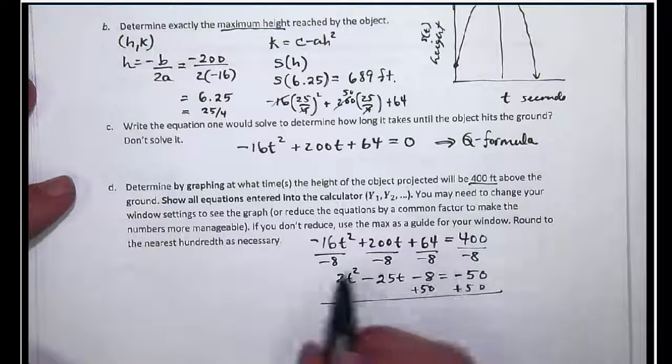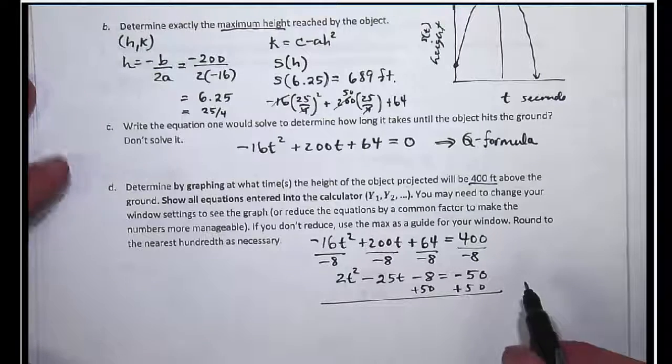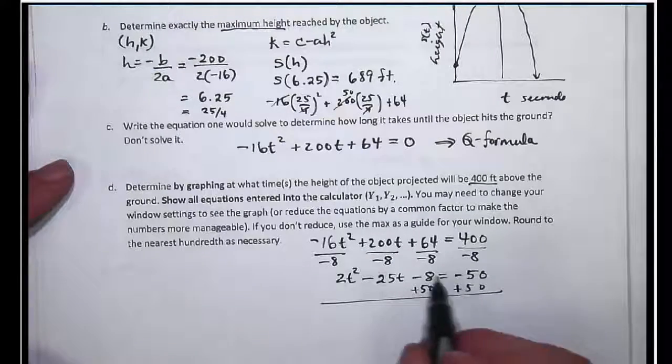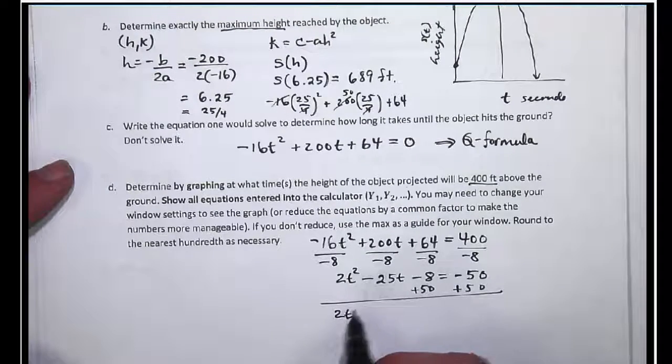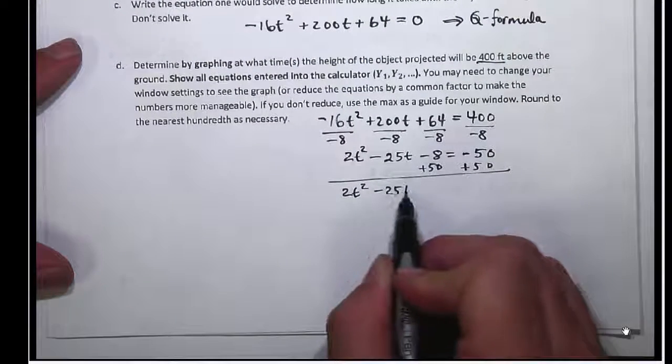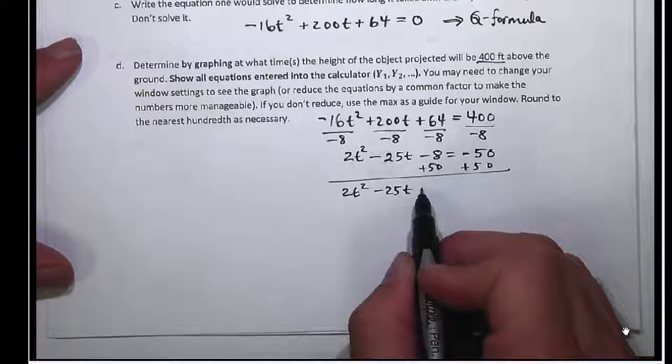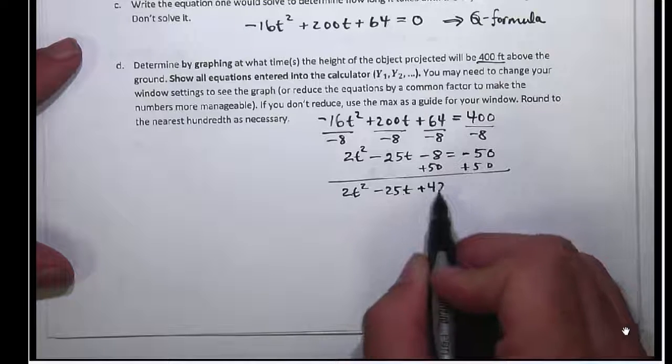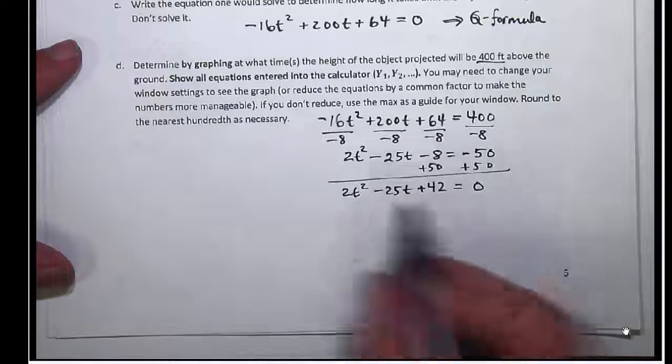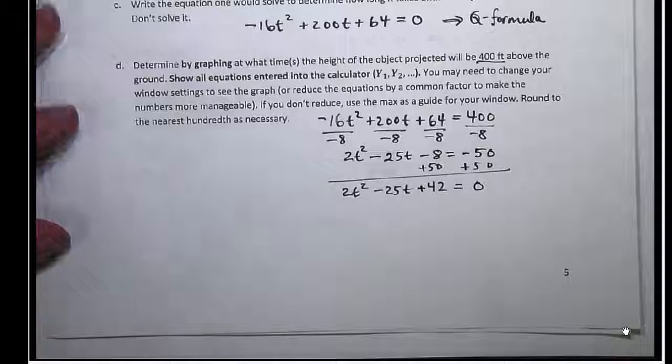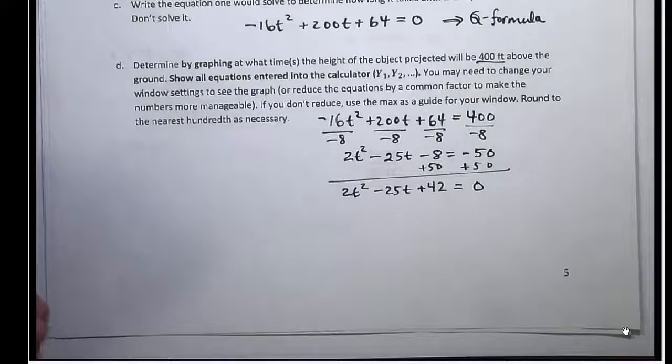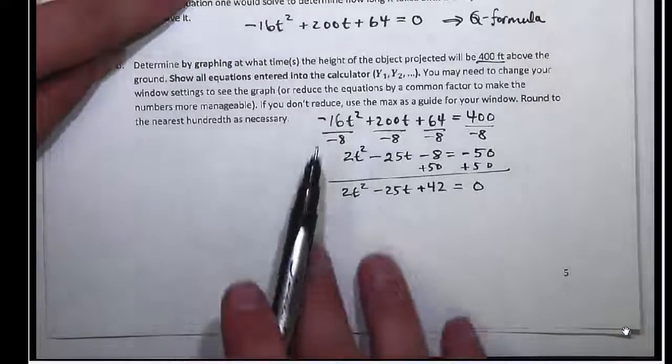You can add 50 to both sides if you want. Or you could call this Y1 and this Y2 and solve it by graphing from there. I'm going to do this though. That comes out to 2t² minus 25t plus 42 equals zero. I'm not going to try to factor that or use quadratic formula, I'm just going to put that in my calculator and look for when it hits the ground.